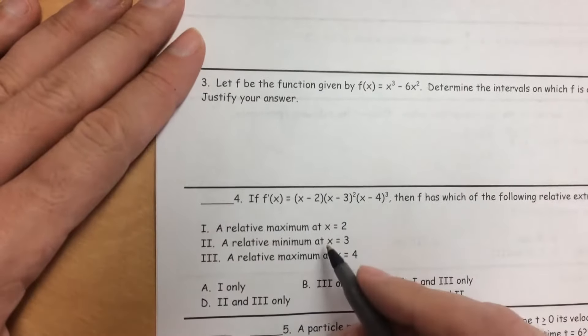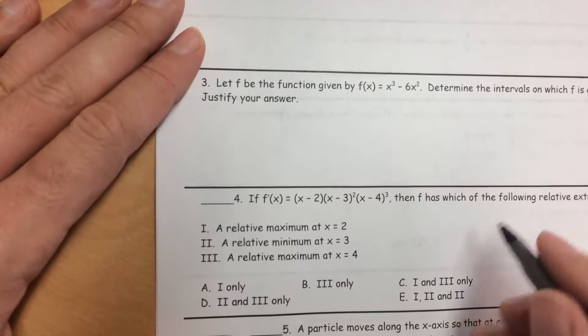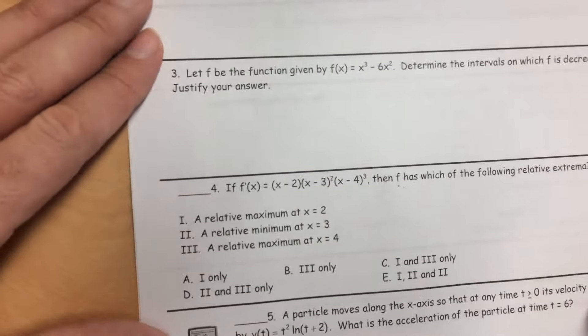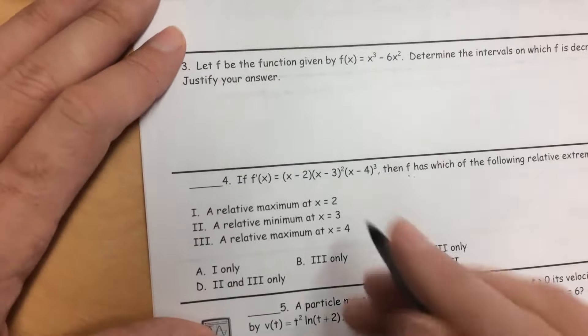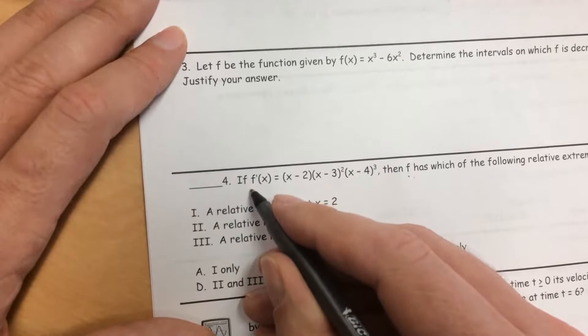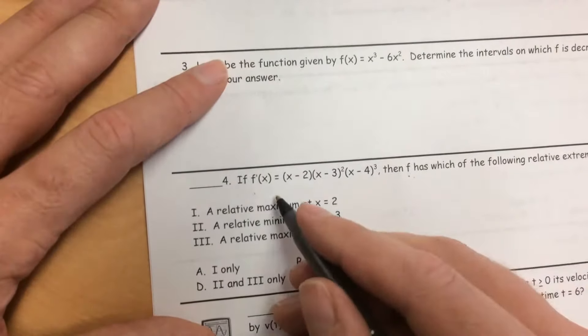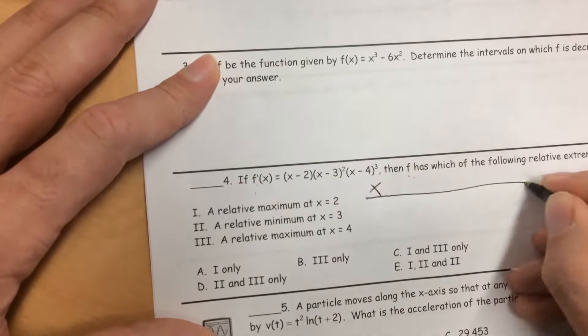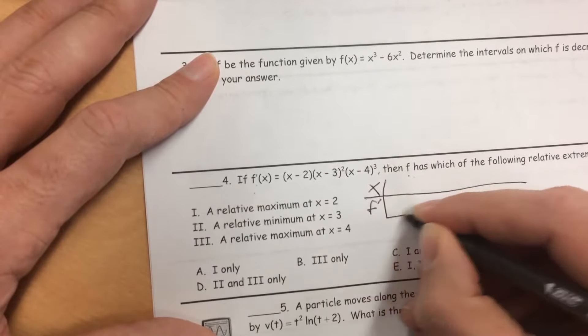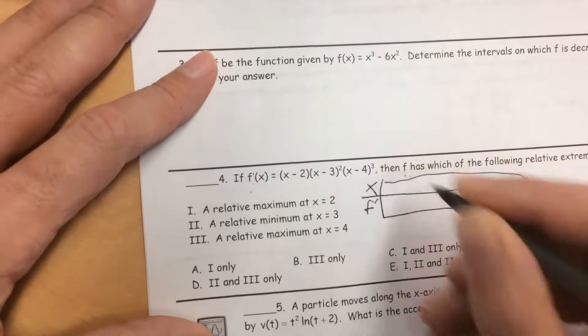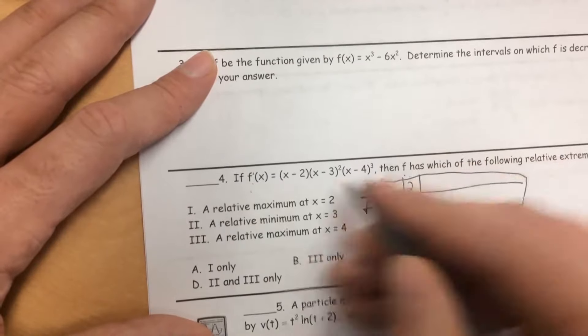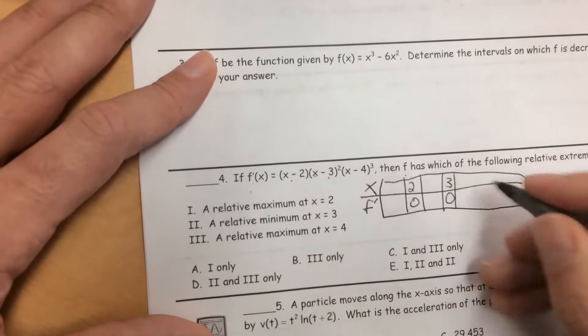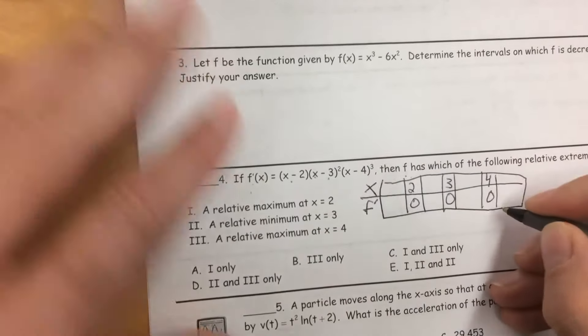Let's look at number 4. We want to find where f has the different relative extrema. And so here's f'(x). It already gives us the derivative of f. And so we're going to make a sign chart. We don't need to take the derivative. They've already given it to us. And so we want to look at x, and we're going to make a sign chart. At x equals 2, the derivative will be 0. At x equals 3, the derivative will be 0. And at x equals 4, the derivative will be 0.